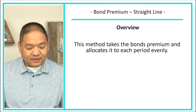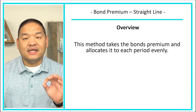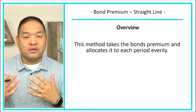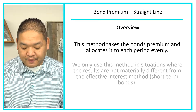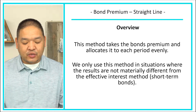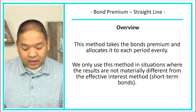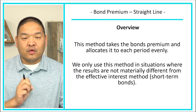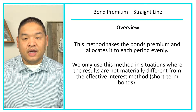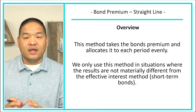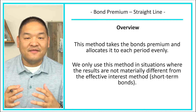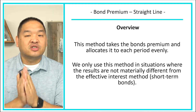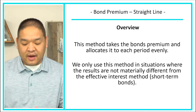This method takes the bond premium and allocates it evenly each and every period. That's why it's called the straight line, just like straight line depreciation. We only use this method in situations where the results are not materially different from the effective interest method. This is usually true for short-term bonds — the difference is very immaterial, so we can get away with doing this.